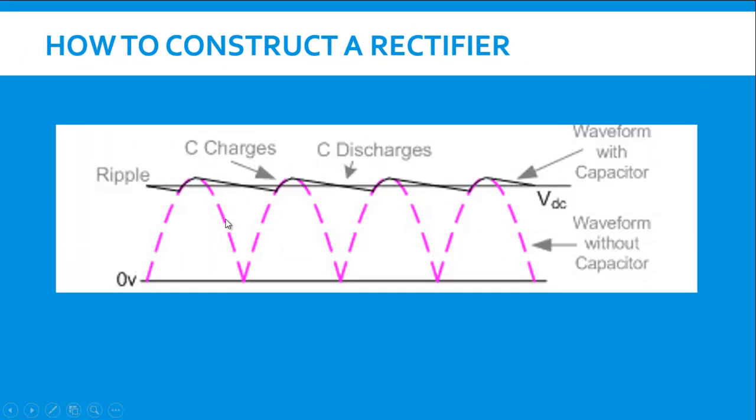During the positive half of the sinusoidal wave the capacitor charges and as the voltage goes down the capacitor holds that value and discharges very slowly. And during the next cycle again it charges and this cycle continues. So the net DC output that we get is much more than 0.637 of the maximum of the peak voltage that we had calculated in the half wave rectifier.